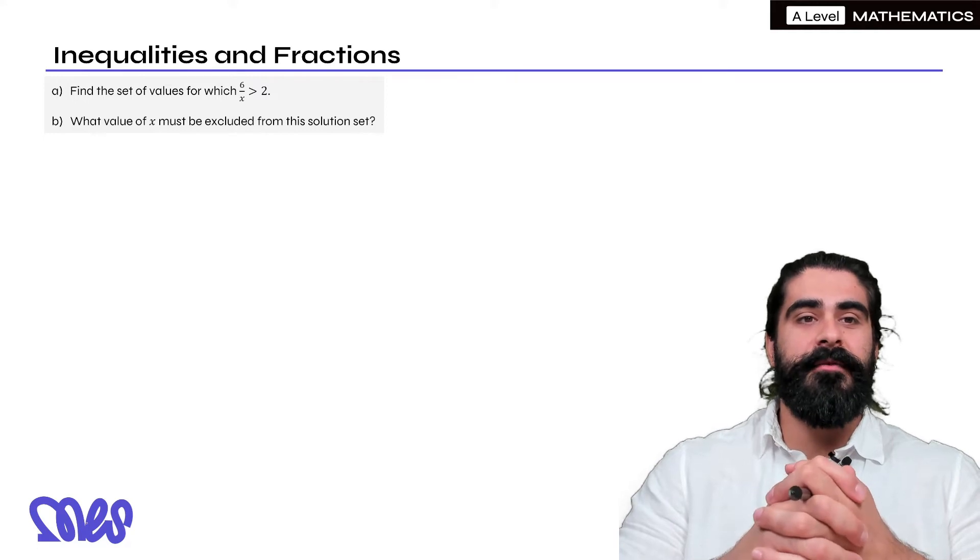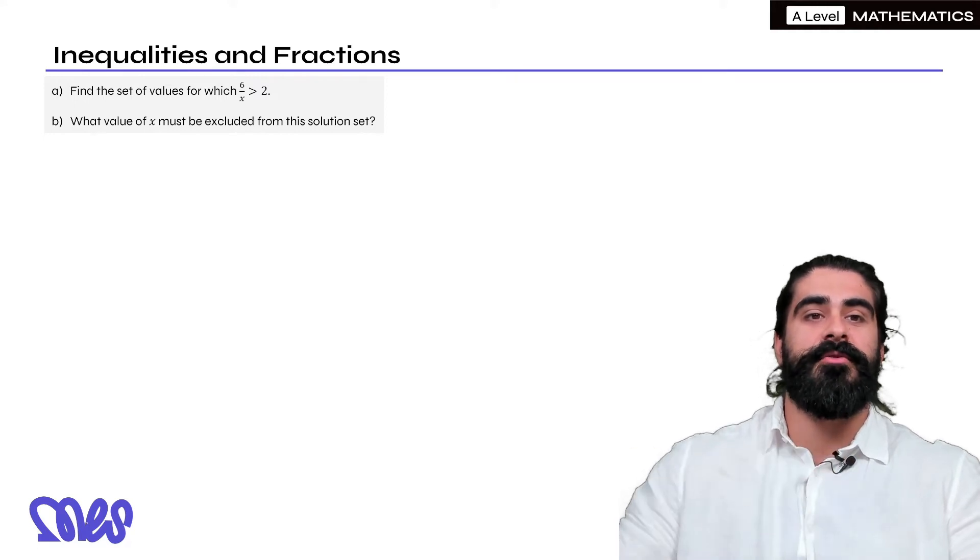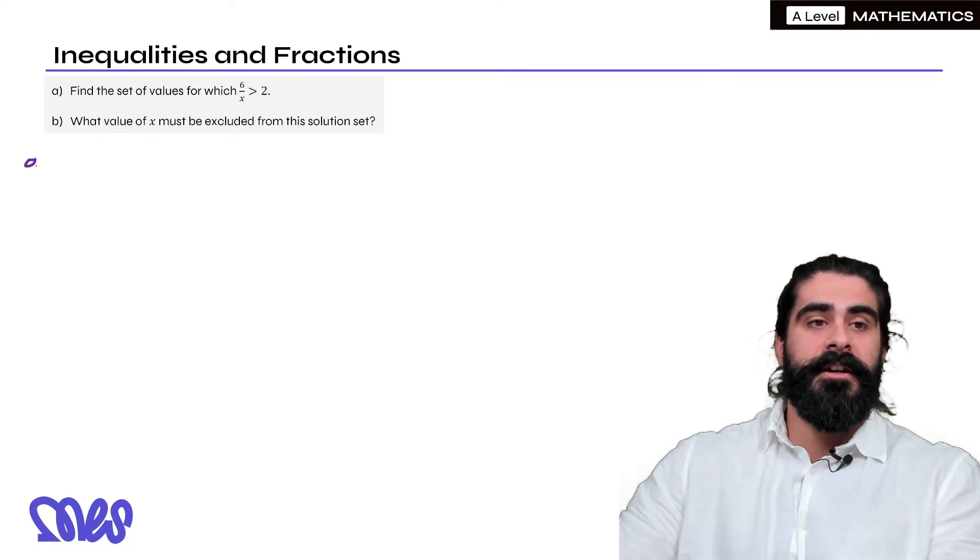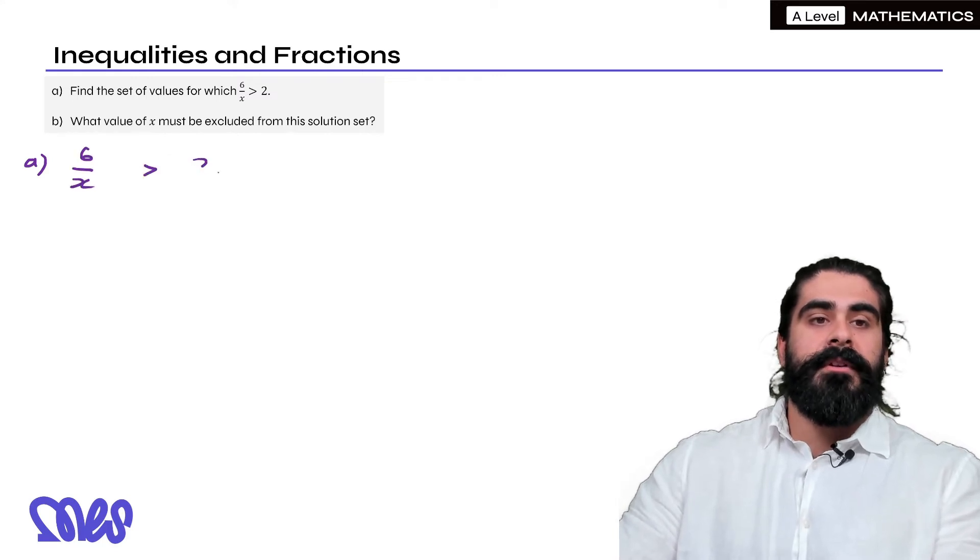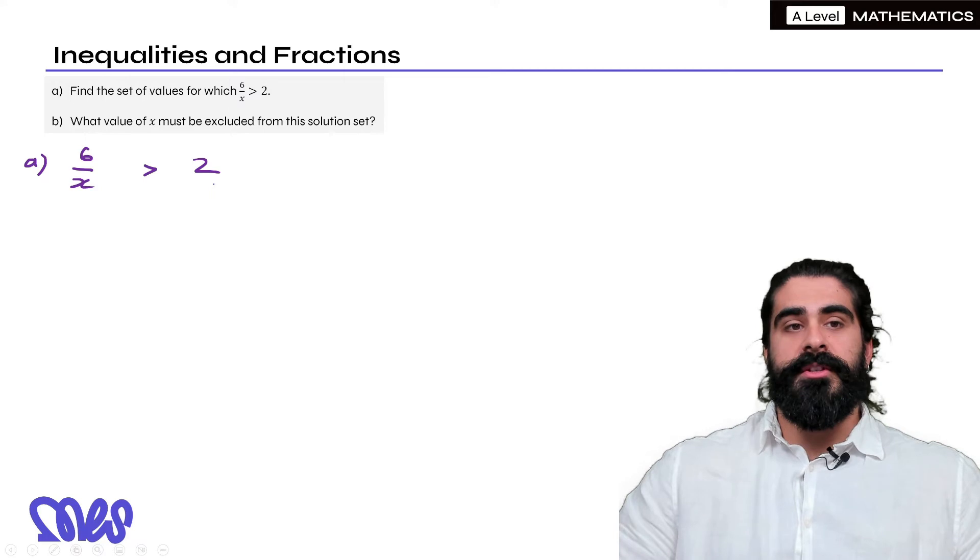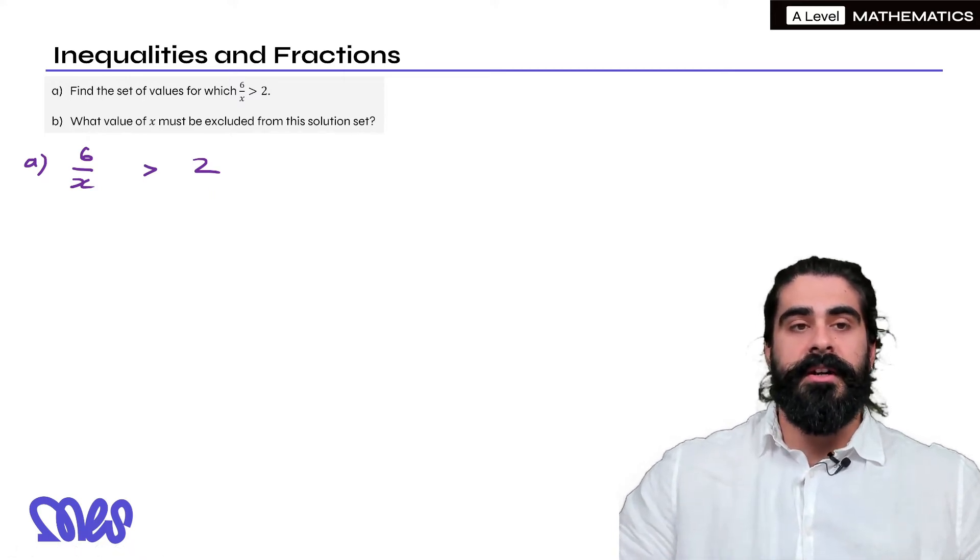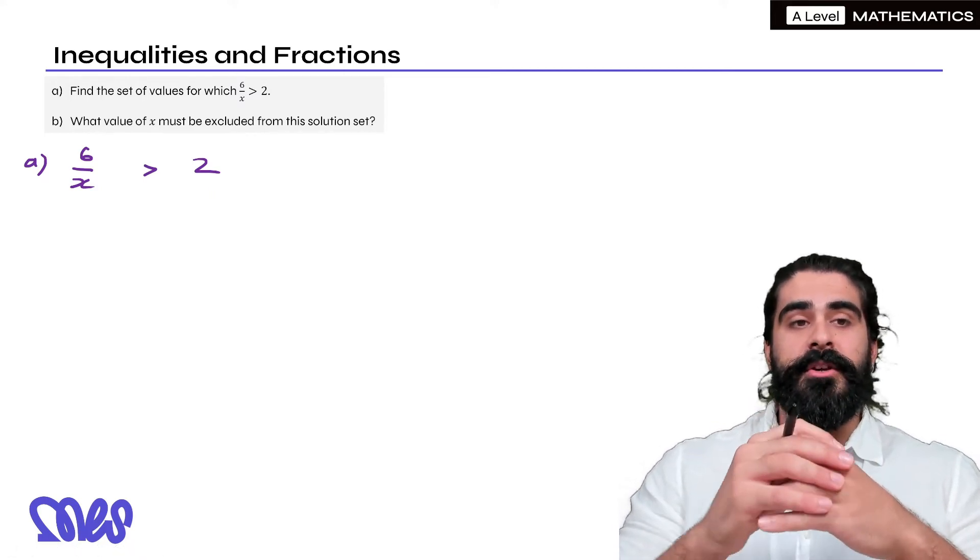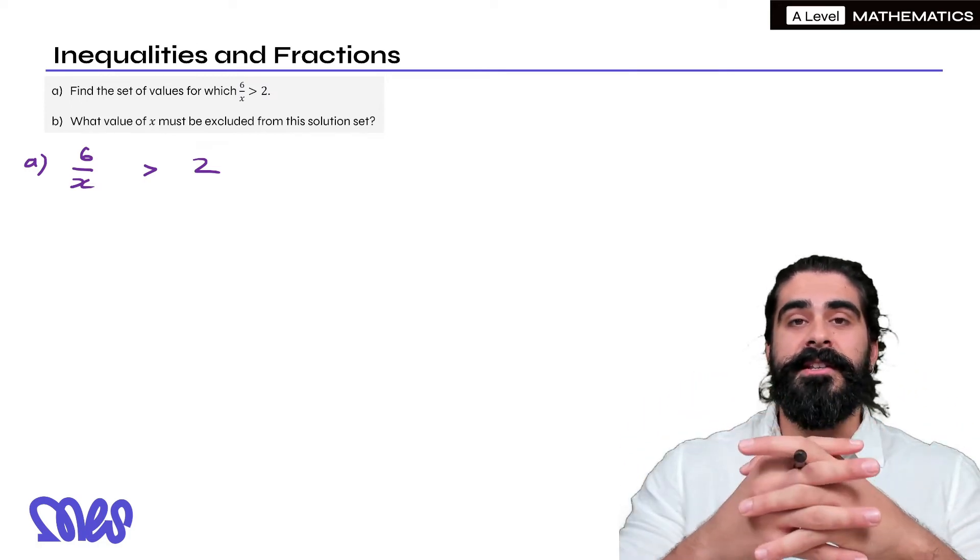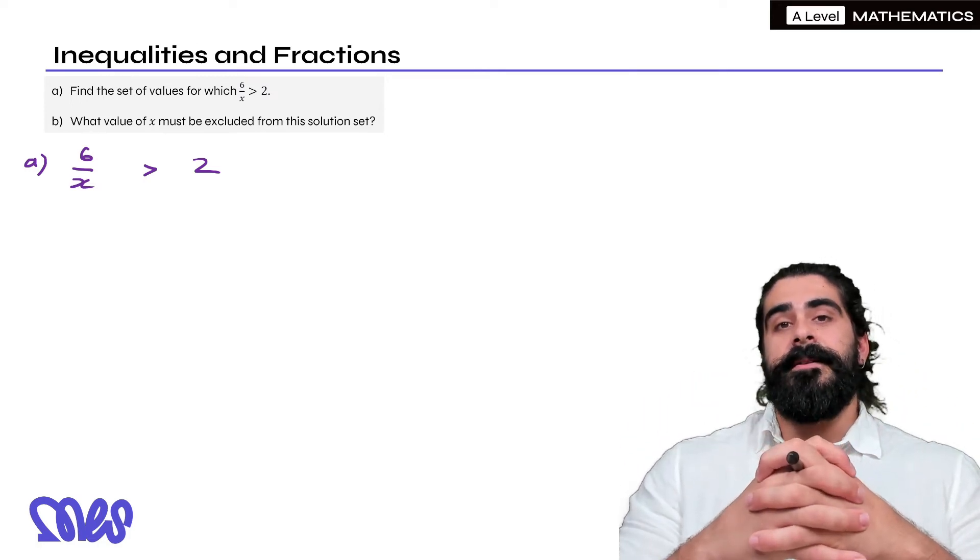So part A, find a set of values for which 6 over x is greater than 2. Now there's a couple of things we need to consider here. Now we know if it was an equal to symbol we would just times through by x, right?